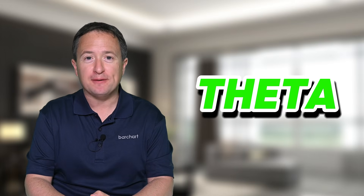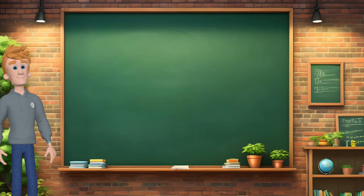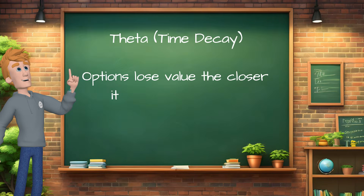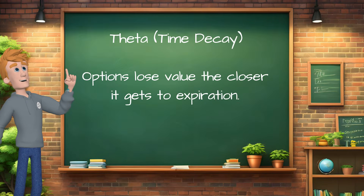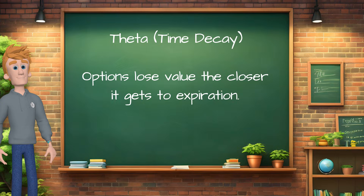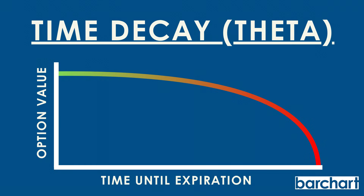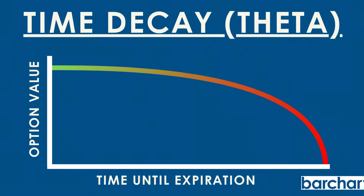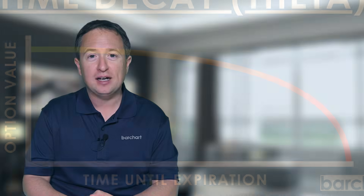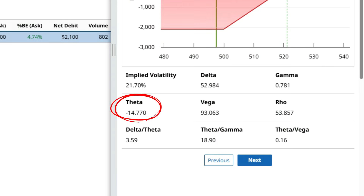Next, we have Theta, or time decay, which indicates how much the option will lose in value each day, assuming everything else stays the same, including the underlying security's price. Since options lose value every day as they get closer to expiration, Theta in single-legged long trades is expressed as a negative number — it's the amount that the option will lose in value every single day.